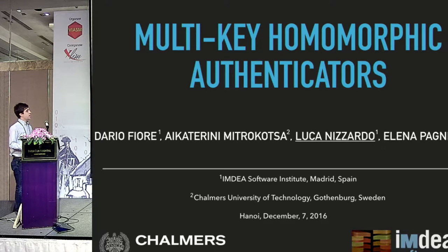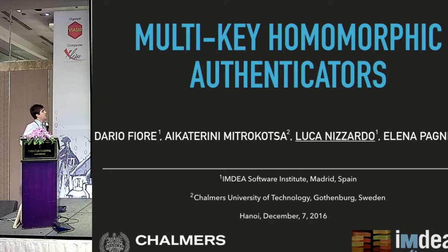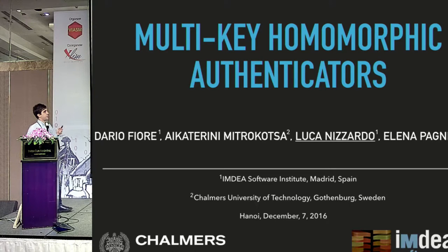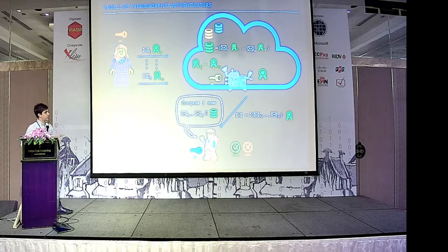Alice wants to outsource the messages to the cloud. And then later on there is another guy, Bob, who wants to compute a function over the messages that Alice stored in the cloud. The cloud answers back with the result of the computation, and Bob wants a way to be sure that the result was computed correctly. The solution is we give Alice a secret key so she can authenticate the messages, and the messages and authenticators are stored in the cloud. We provide the cloud with a magic machine that uses an evaluation key to produce an authenticator of the output of the function from authenticators provided by Alice. This authenticator of the output can then be attached to the output, and Bob has a verification key with which he can verify the computation and either accept or reject.